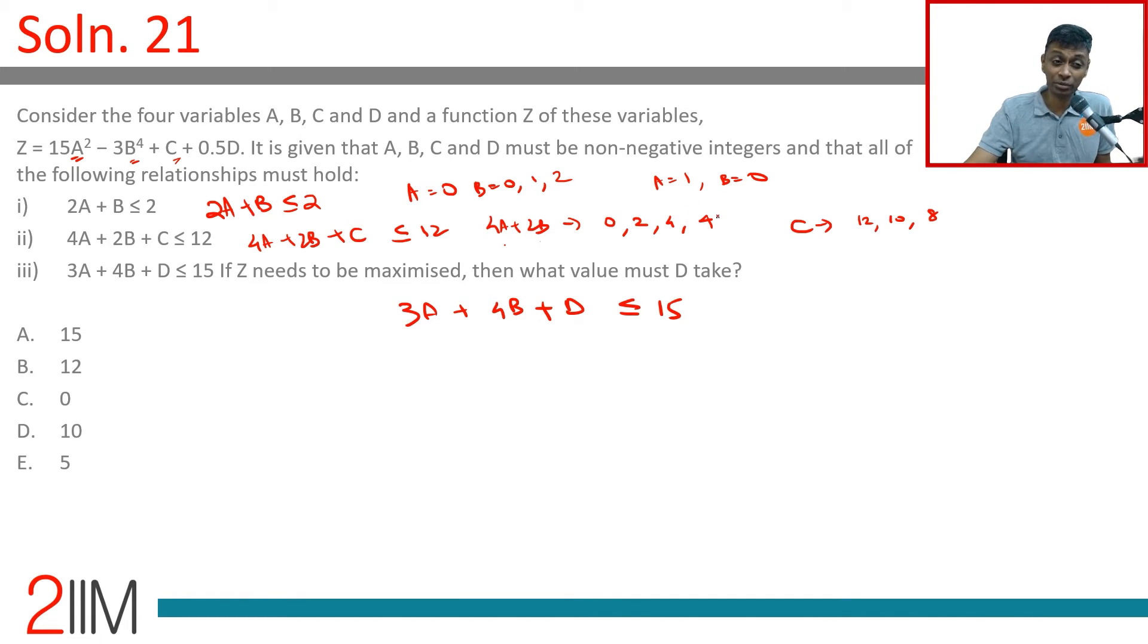We need to maximize D also. But A's coefficient is 15. We're dealing with nice small numbers. You can't really max out C. Maxing out D is also not that easy. For the total to be high, if you put A as 0, putting B also as 0 is the best case scenario.